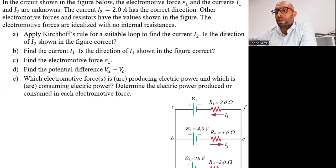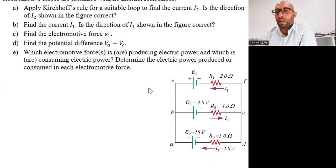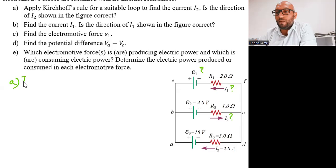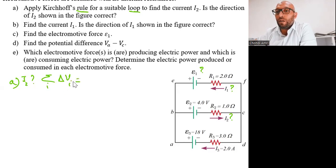Let's discuss our circuit. I1 is unknown, I2 is unknown, and epsilon 1 is unknown. The question asks us to determine the current I2. What is Kirchhoff's loop rule? The sum of the potential differences across all the elements of the circuit is equal to zero. Let's draw the potential differences across all the elements of the circuit.